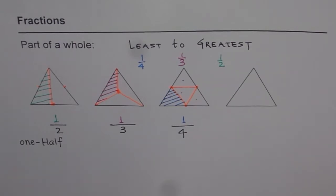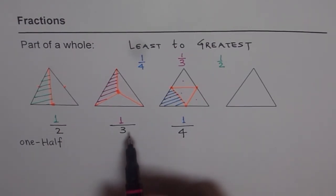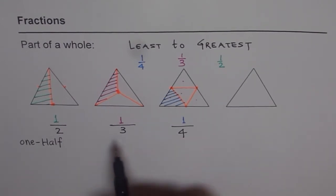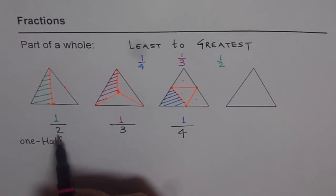Another way to figure this out — think about it like this: if you have 12 candies to share with four persons, how many will you get? If you share with three, how many will you get? And if you share 12 candies with just two — yourself and a friend — then if you split them in half, you get six and your friend gets six.